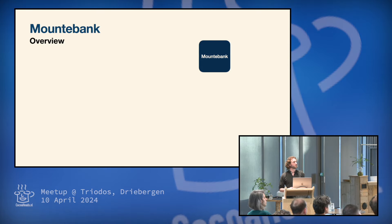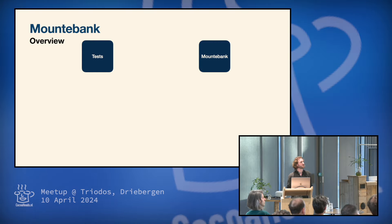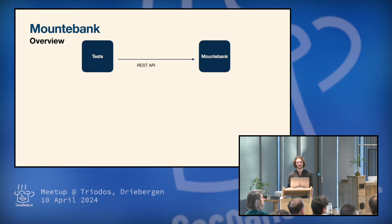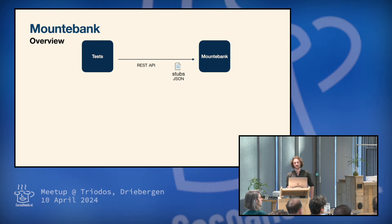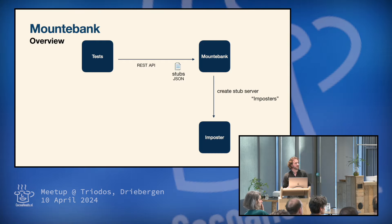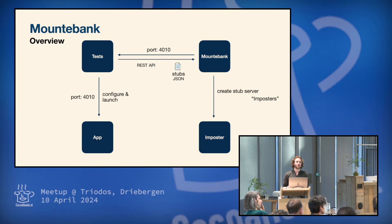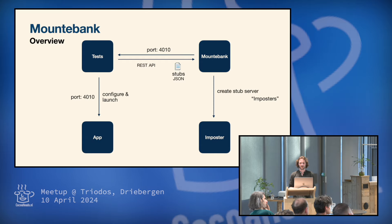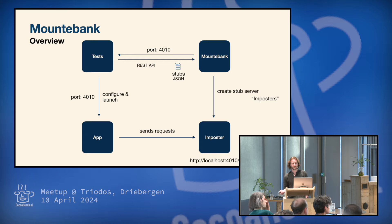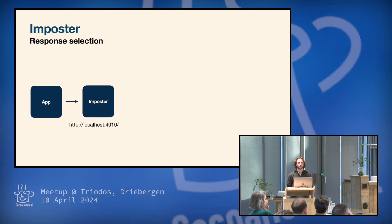So the installation is quite easy. You just say npm install global mountain bank and then you can start it with mb start. So how does it work in your test setup? If you have your Mountain Bank instance running, then from your test there's a REST API you can use to set up a server. So you call the REST API with your stubs for that specific test, and then Mountain Bank will create a server for you — Mountain Bank calls these things imposters. So we have our stub server running, and then when that is created by Mountain Bank, Mountain Bank will generate a random port where the server is running on. And then the test can launch and configure the app with that port that the stub server is running on.